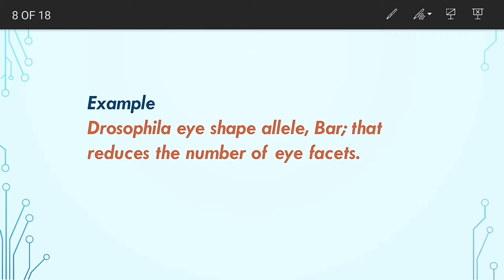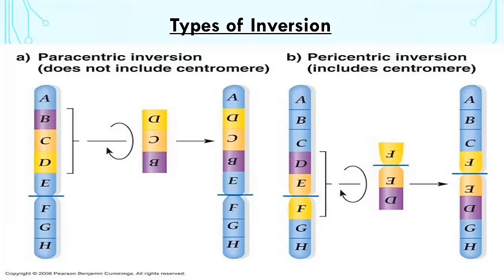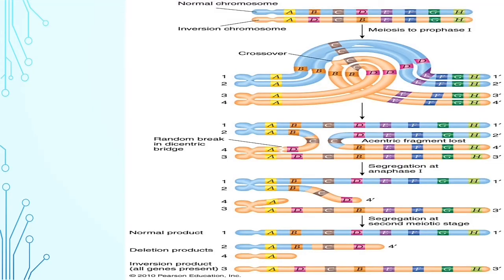Now let's talk about inversion. In this case, there is a change in direction of the genetic material along a single chromosome. Inversion can be of two types: paracentric inversion, which does not include the centromere, and pericentric inversion, which does include the centromere — meaning the centromere position can also change. Various problems arise from both types during crossover in the cell cycle.